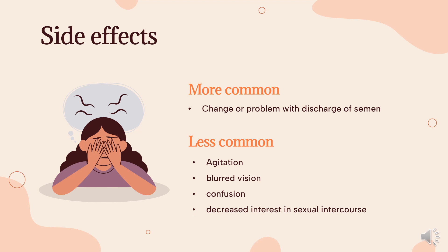Side Effects. More Common: change or problem with discharge of semen. Less Common: agitation, blurred vision, confusion, decreased interest in sexual intercourse, fever, inability to have or keep an erection, increased frequency of urination or amount of urine produced, lack of emotion, loss in sexual ability, desire, drive, or performance, loss of memory, menstrual changes, skin rash or itching, trouble breathing.